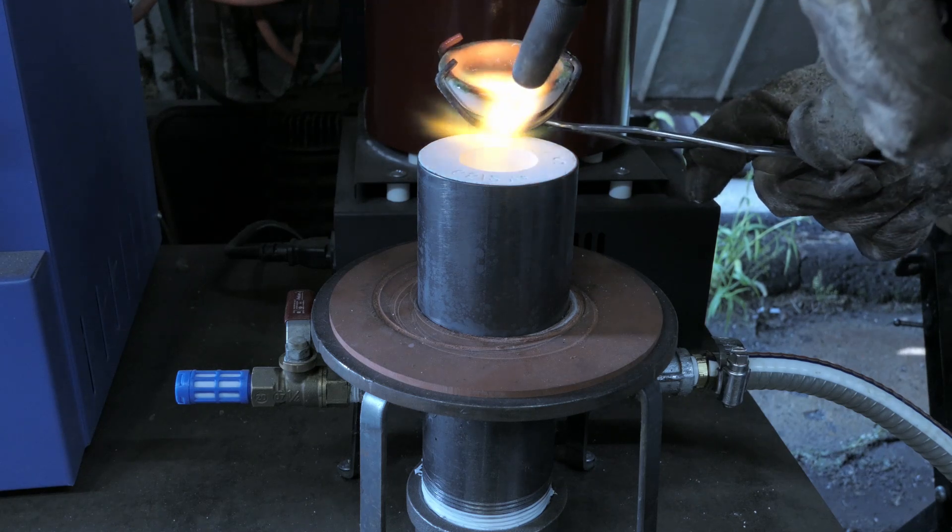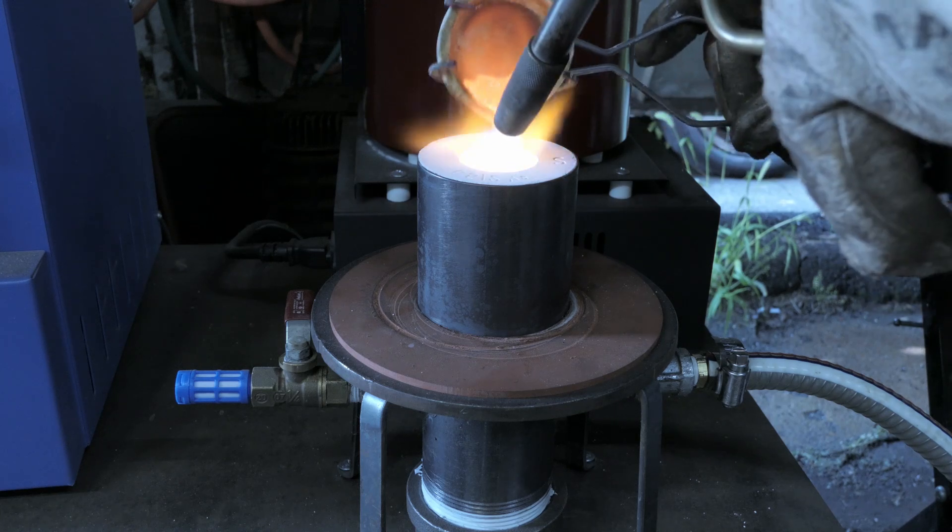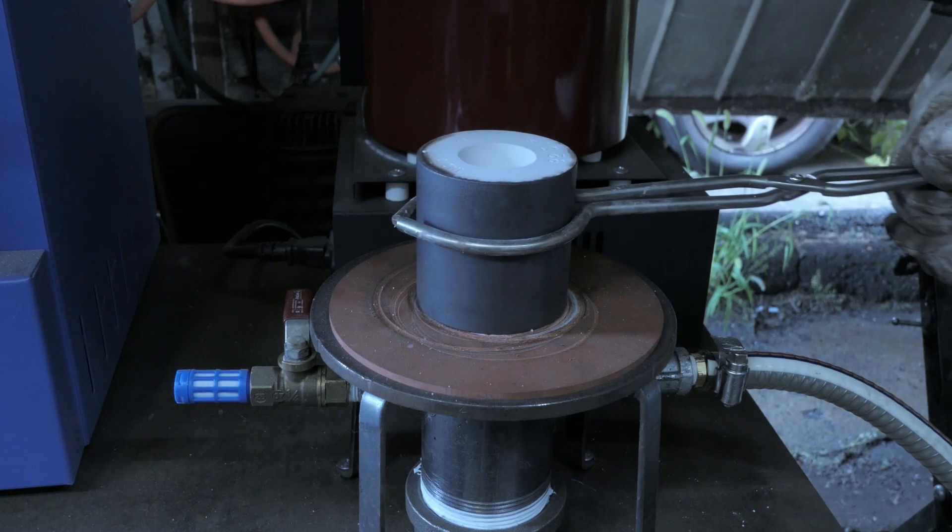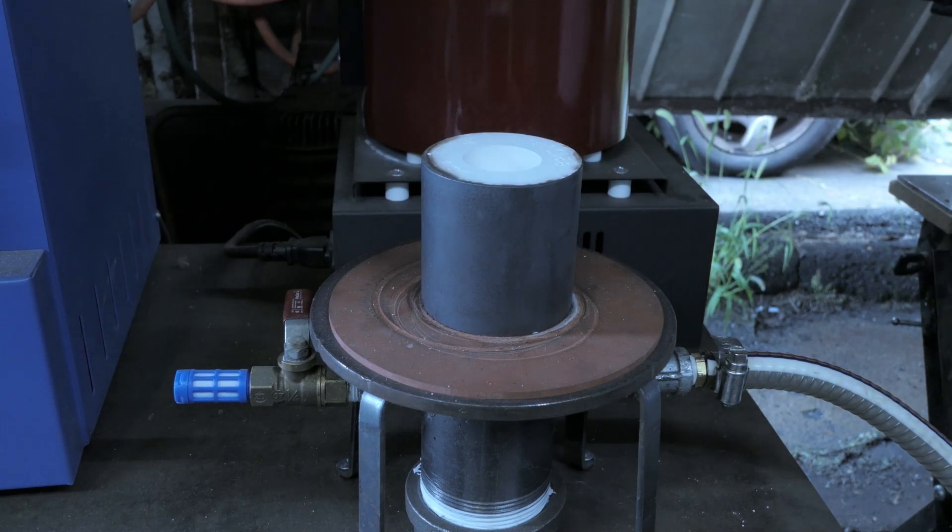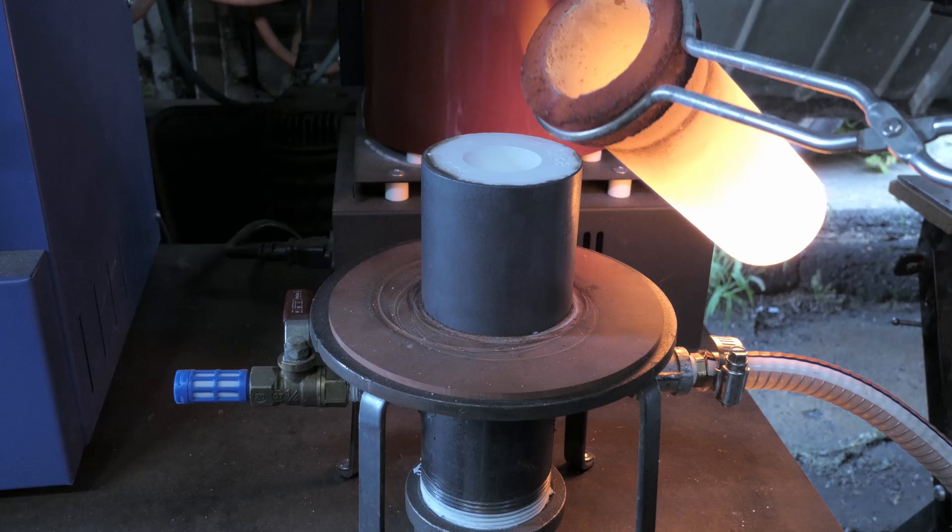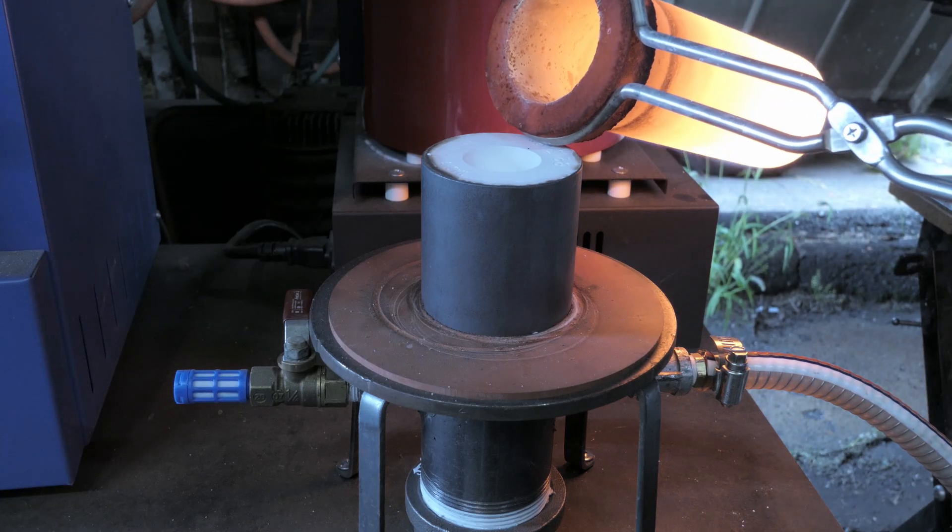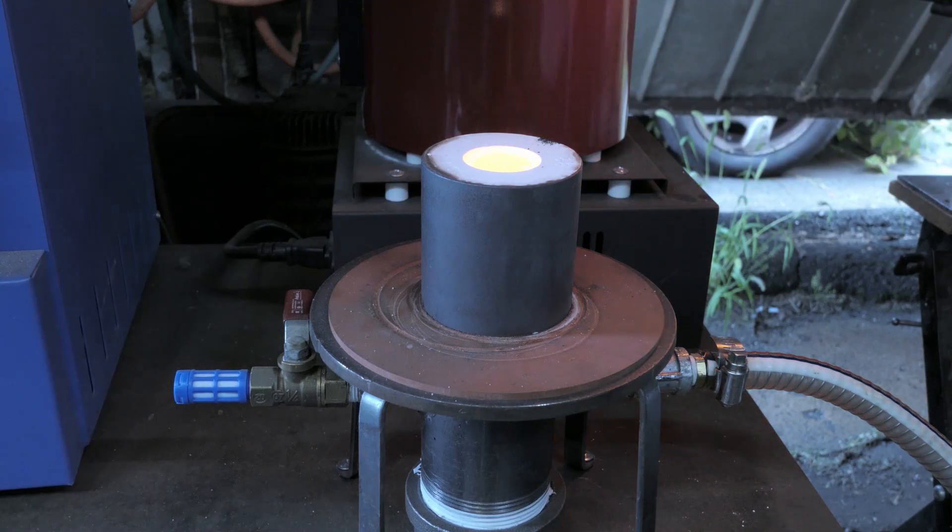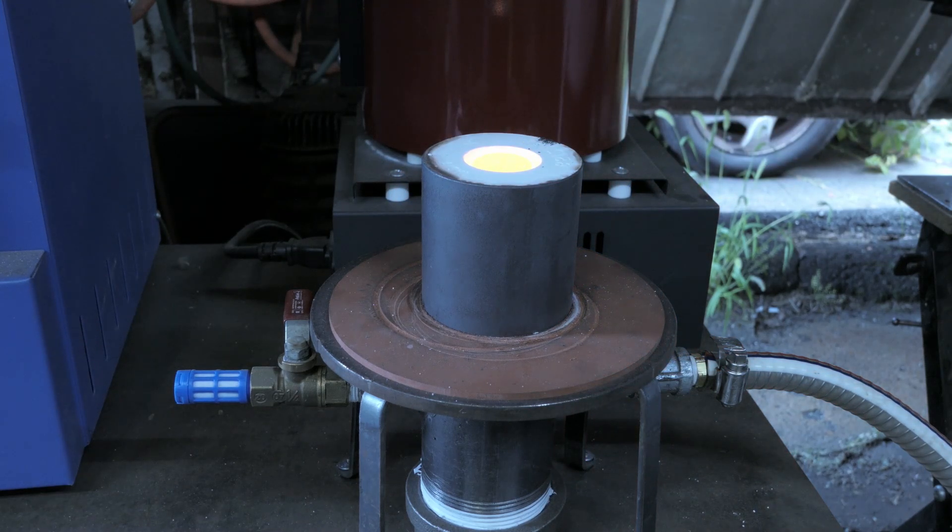So the silver was melted just using some map gas and the bronze was melted using the electric furnace. Now the bronze was cast at around 1,900 degrees Fahrenheit, which is probably just a little too low for these kind of prints. So that's going to be something to keep in mind for next time.